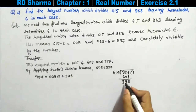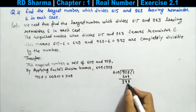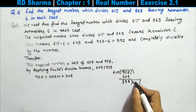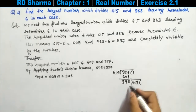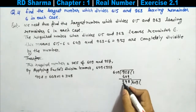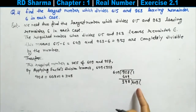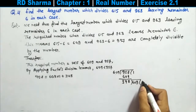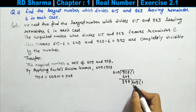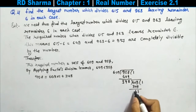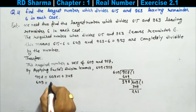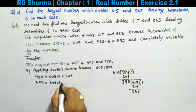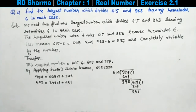Again applying the long division method, we divide 609 by 348. We write 609 equals 348 into 1 plus 261.